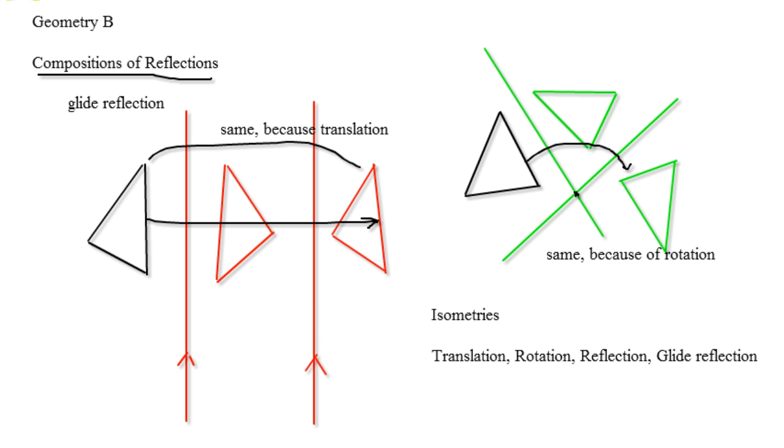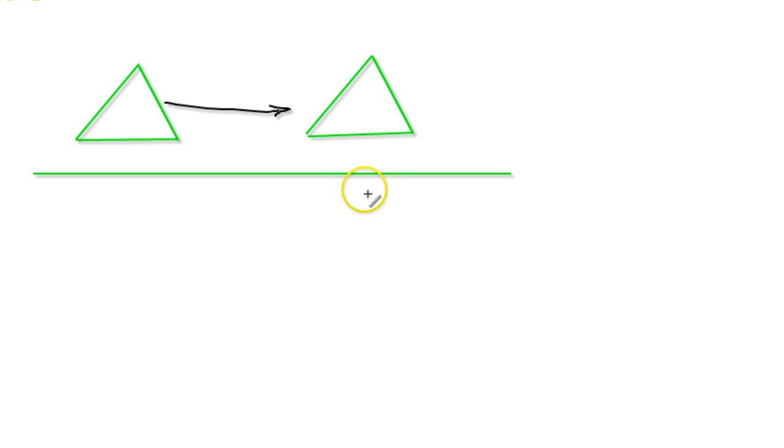Now a glide reflection is just basically going to be the same thing as what we've been dealing with, except you're going to take the image and you're going to move it first. So you take your preimage and you move it, and then you actually have your line of reflection. And so this would actually be what is called a glide reflection.